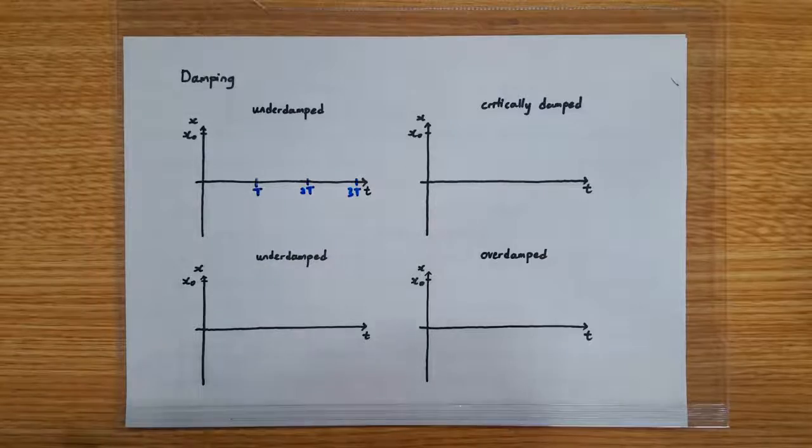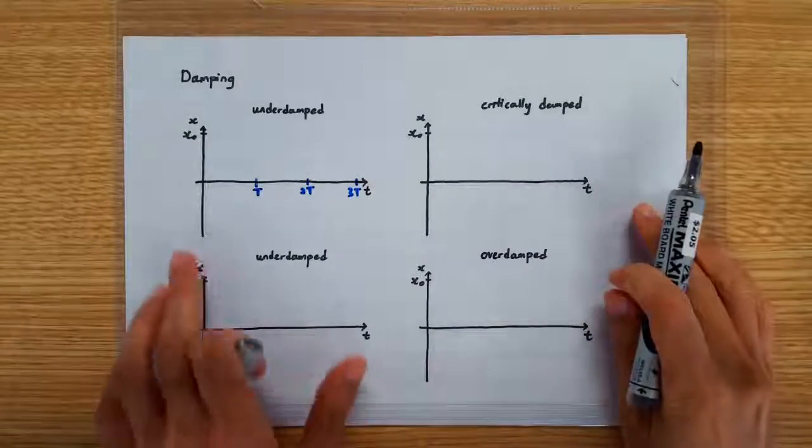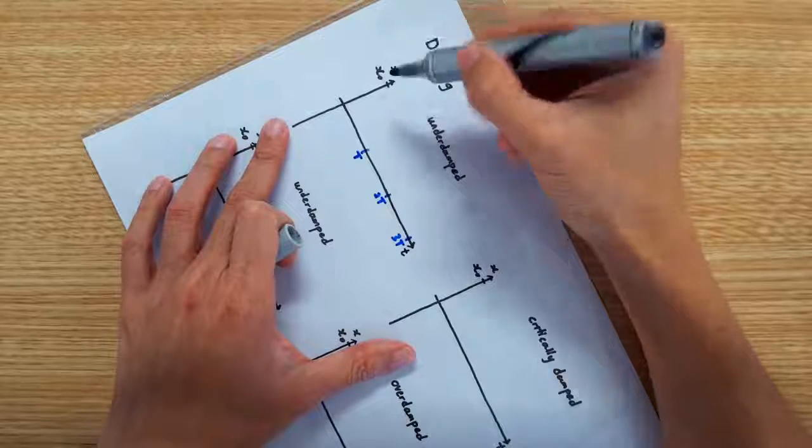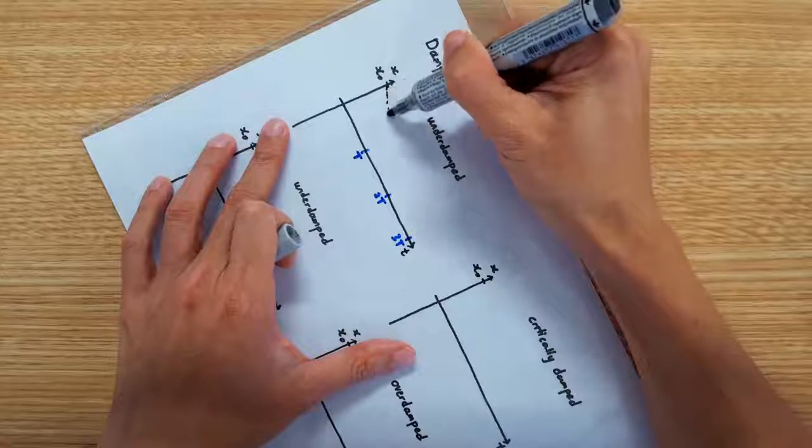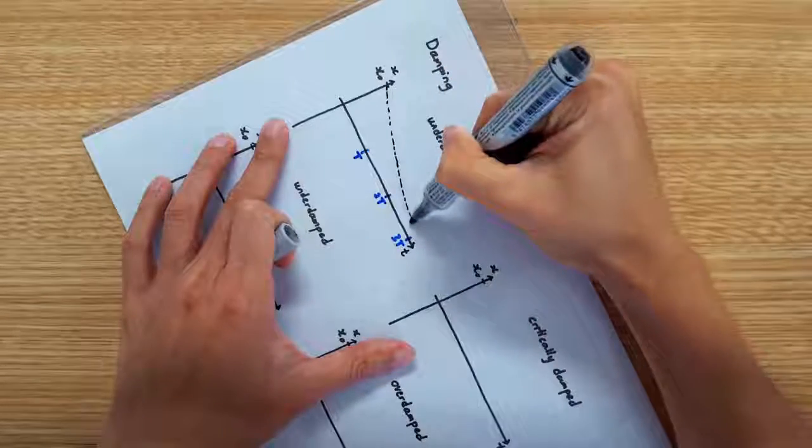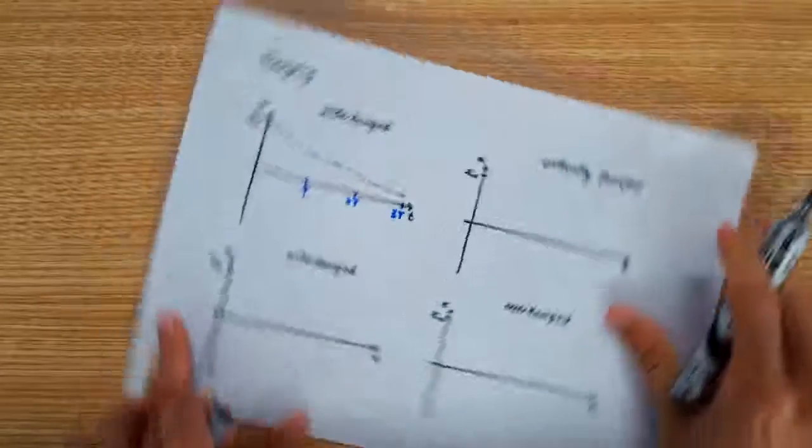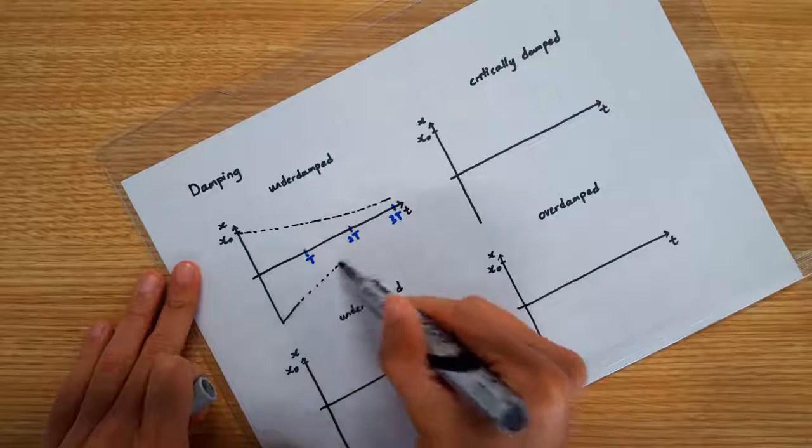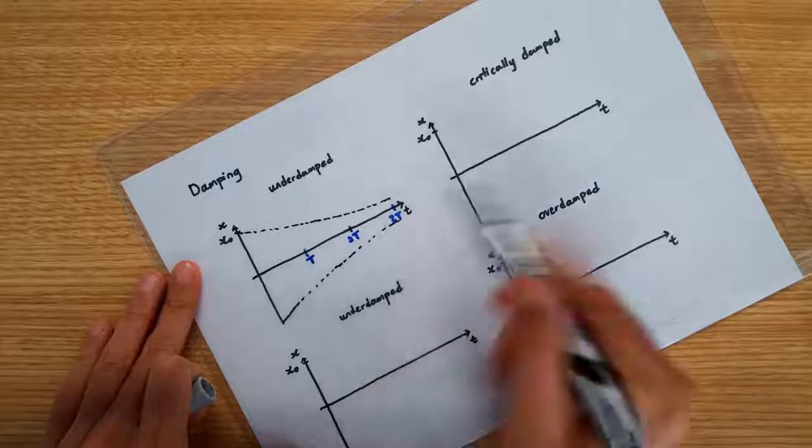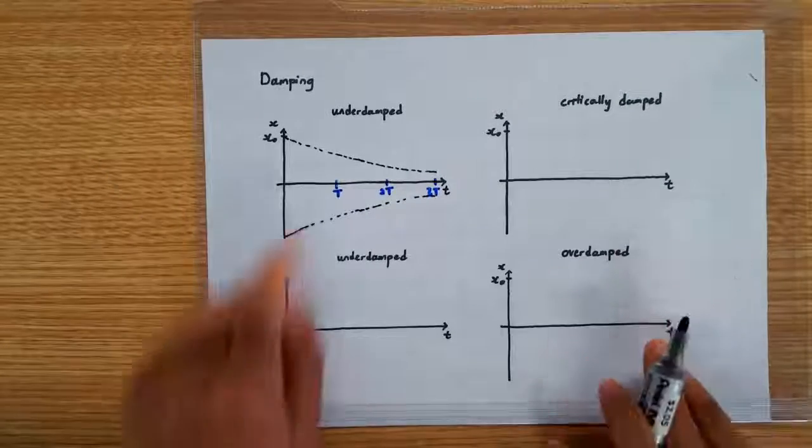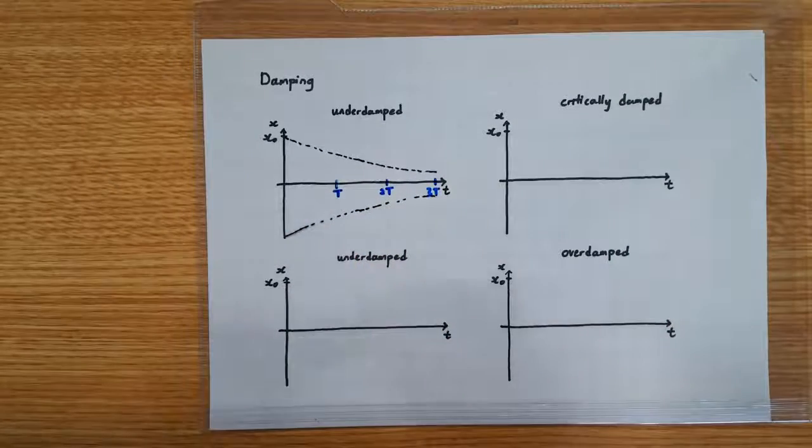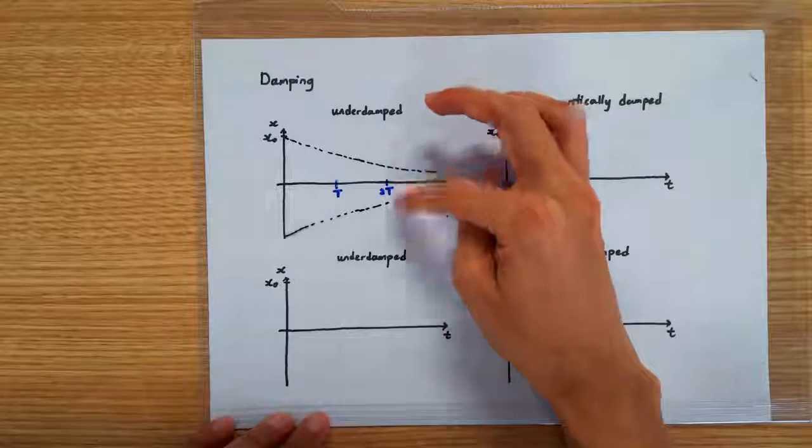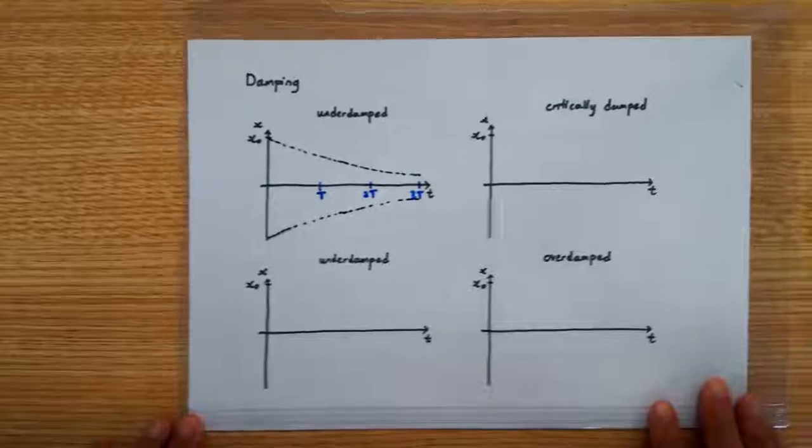Next, I'm going to sketch the decay envelopes. They are supposed to be exponential decays. So, something like this. And I'm going to draw another one on the negative side. So, as I said, these two lines are supposed to be exponential decay graphs. So, they should be mirror images of each other.